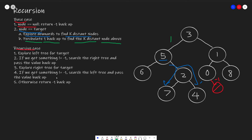In the recursive case, we pass back 1 from node 5 (our target), getting something not equal to negative 1 (our null case). Then we search the right tree, passing our current value of 1 plus 1, giving 2. Once we reach node 1, we hit an answer and add it to our answer list. We also pass the value back up to potentially find any parent node equal to k — but in this example there is no parent.